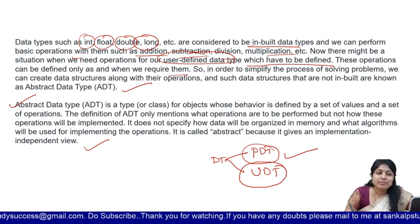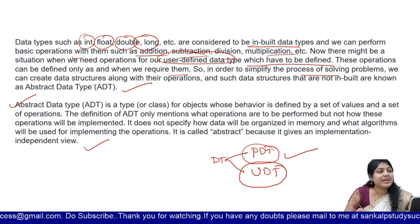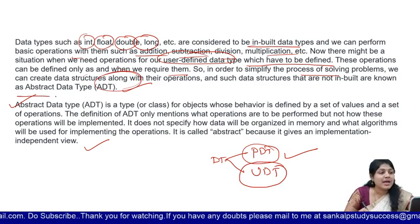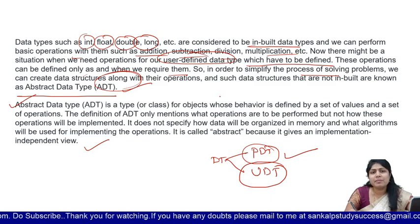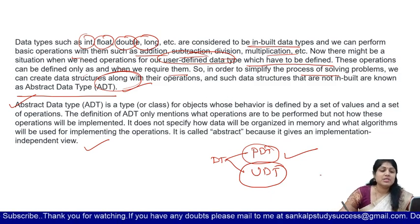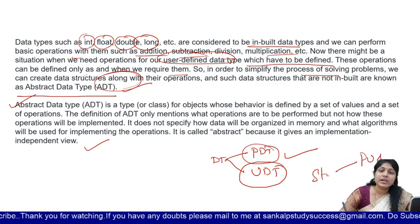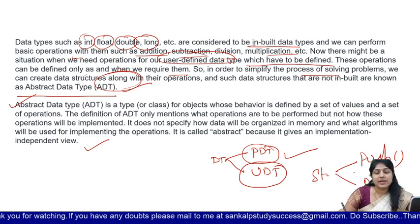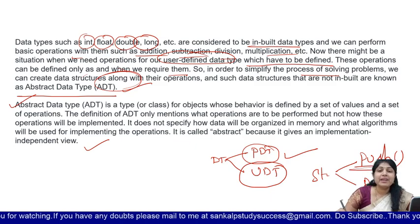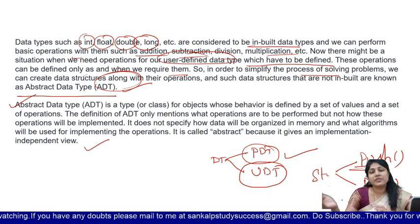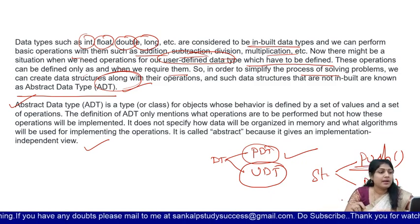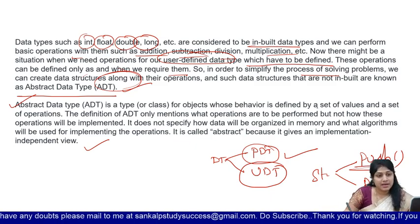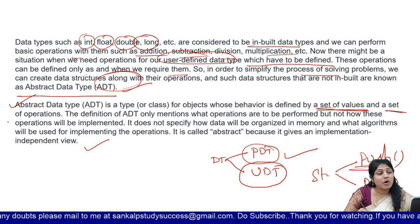These operations can be defined only when we require them. In order to simplify the process of solving these problems, we create one data structure to perform these operations — called abstract data type. This is not a built-in one; this we create. For example, in a stack, for the insertion operation we use push, and to remove the element we use pop. So we use these predefined methods and predefined operations. An abstract data type is a class or object whose behavior is defined by a set of values and a set of operations.